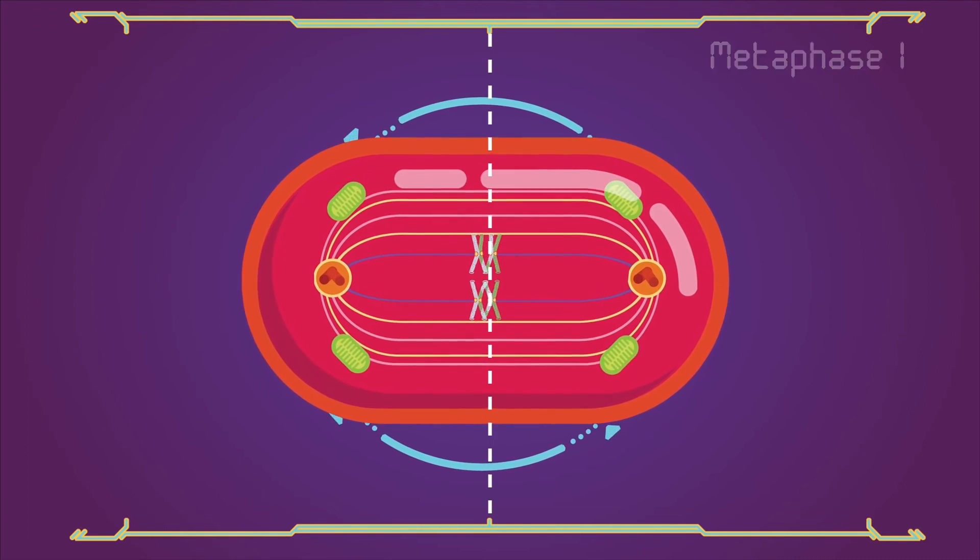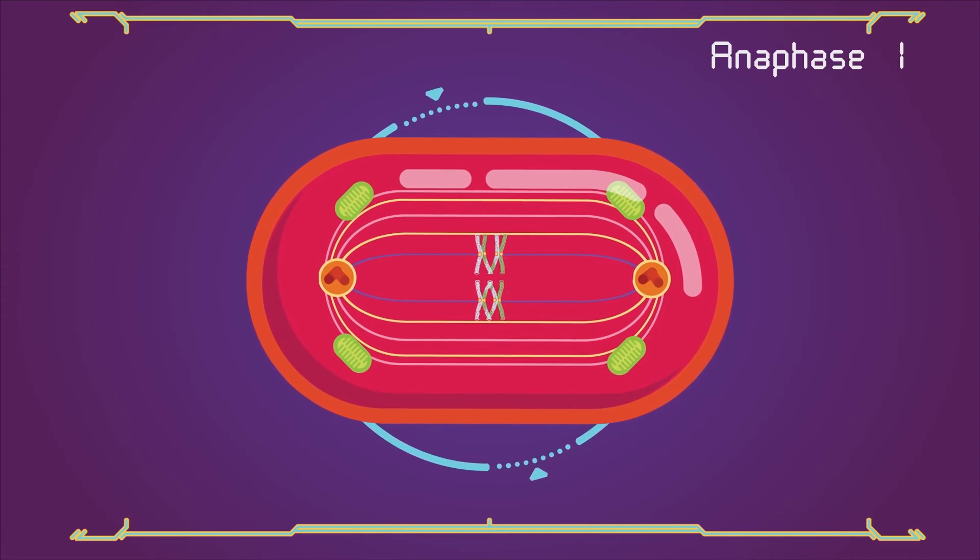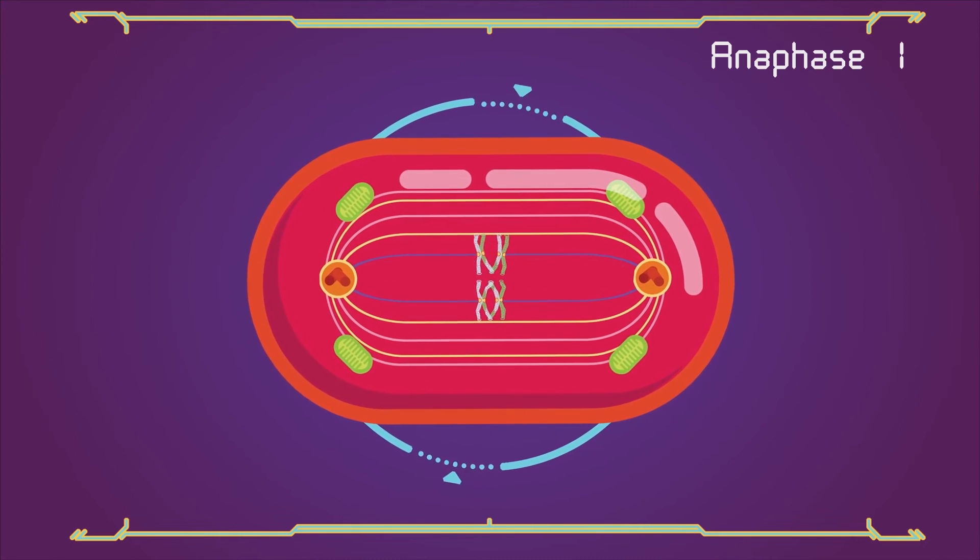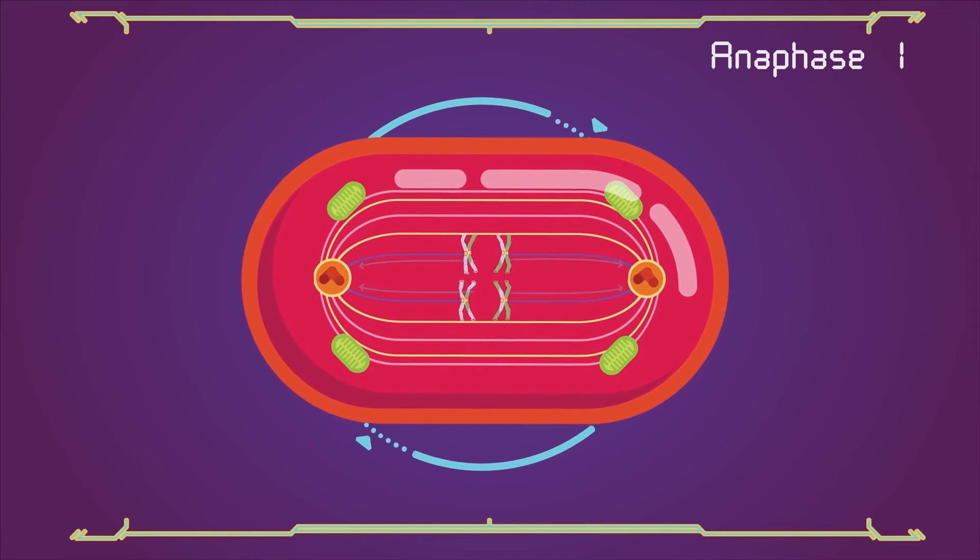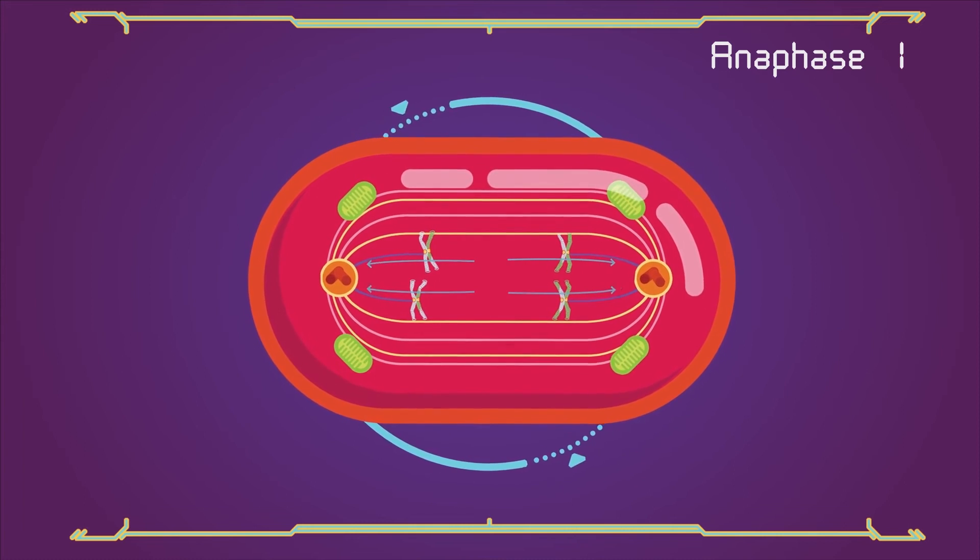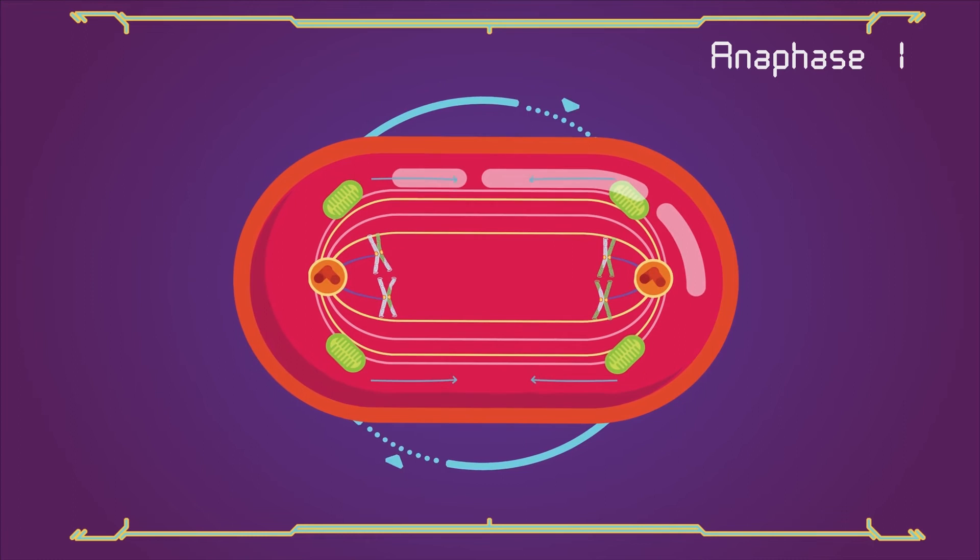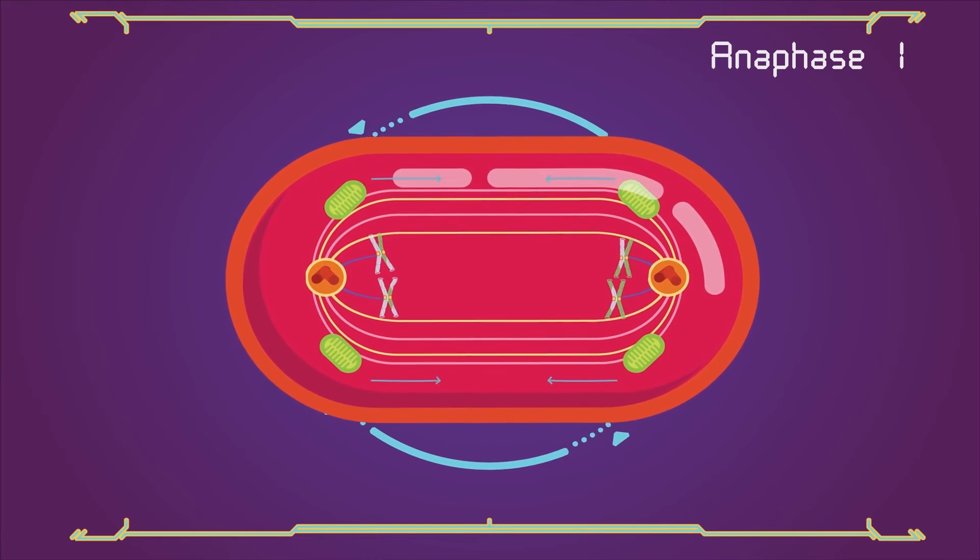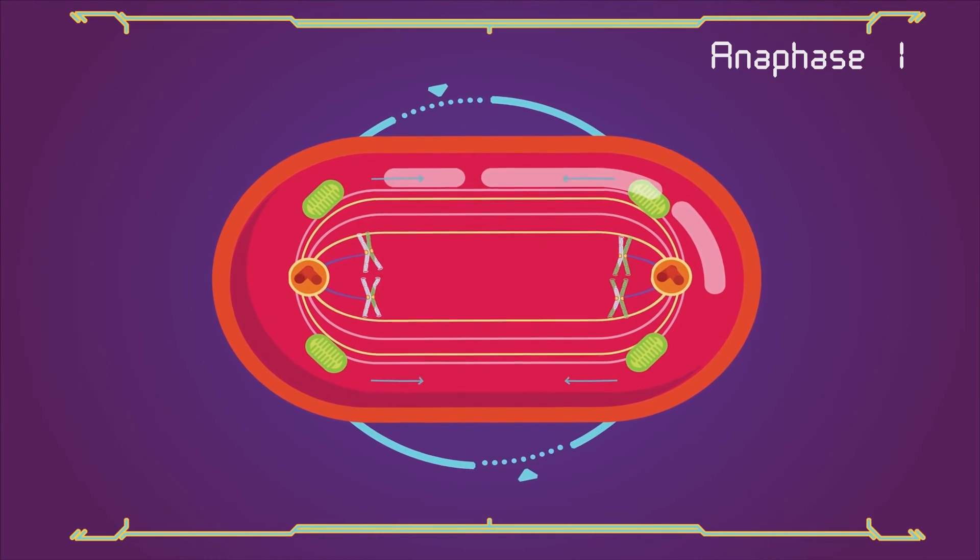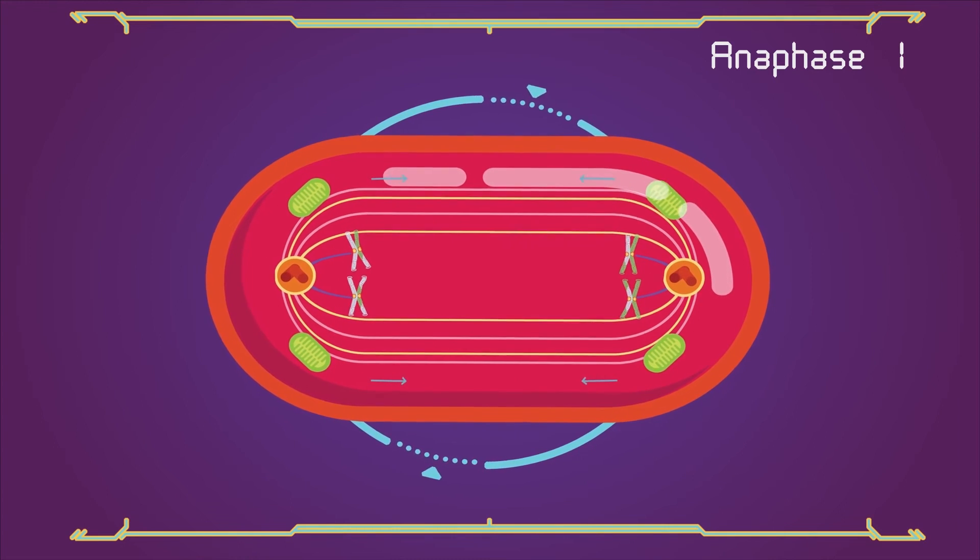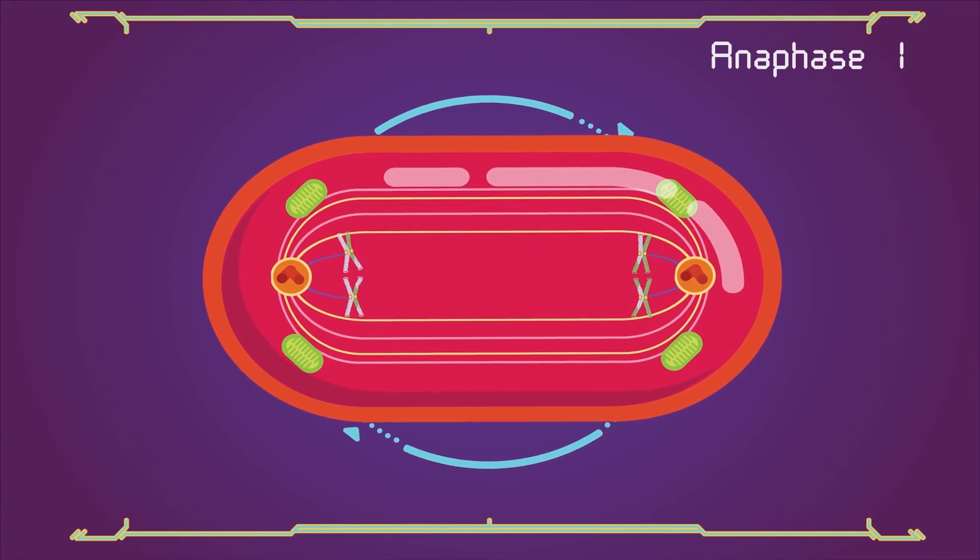Anaphase 1: kinetochore microtubules shorten, pulling homologous chromosomes (which consist of a pair of sister chromatids) to opposite poles. Non-kinetochore microtubules lengthen, pushing the centrosomes further apart. The cell elongates in preparation for division down the center.